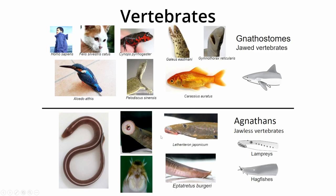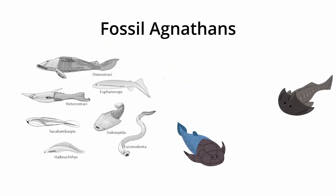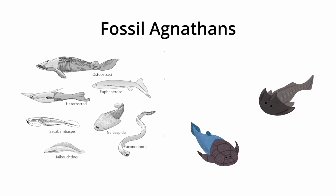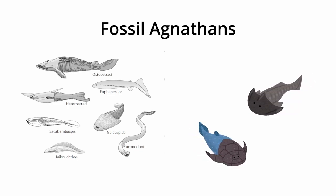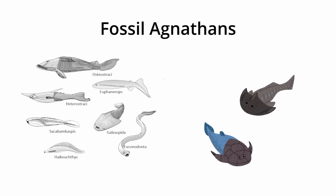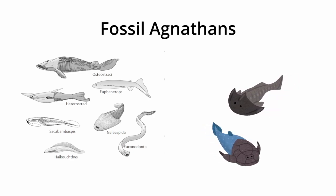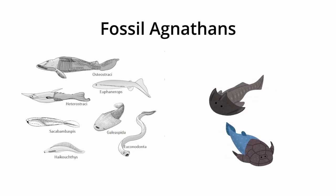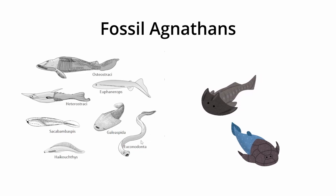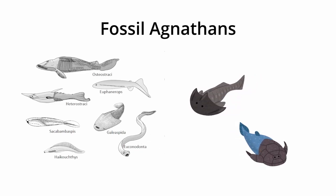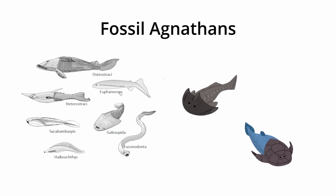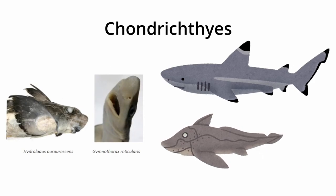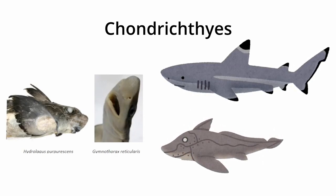Most of the Agnathans are already extinct, but fossil Agnathans existed in really early times — the Devonian, in the early ocean. In the fossil record, paleontologists have found, and are still finding, these fossils, and we can recognize highly diverged Agnathan species.